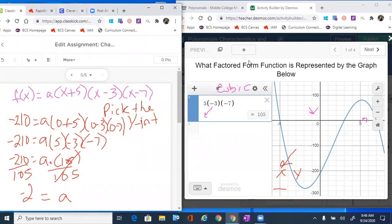So f of x equals to negative two is what we found our stretch, our vertical stretch to be. x plus five, x minus three, and x minus seven.